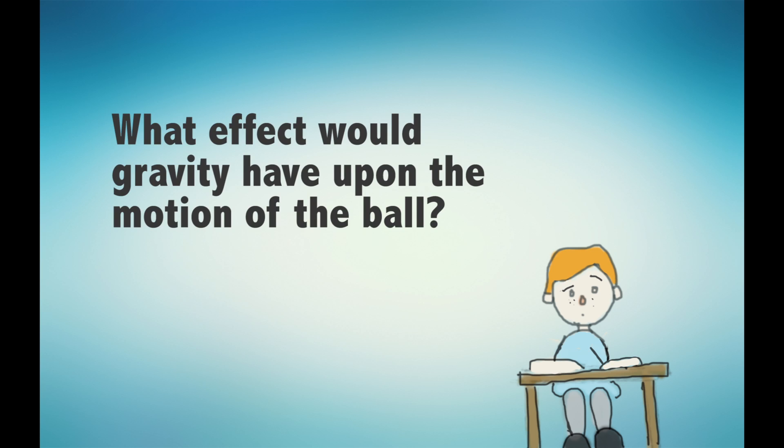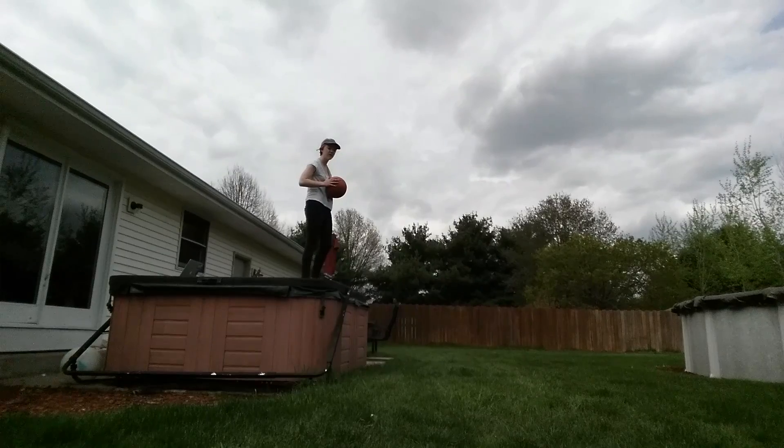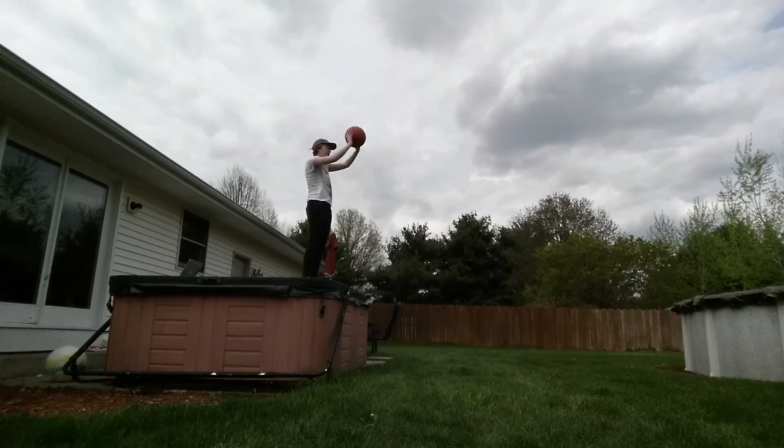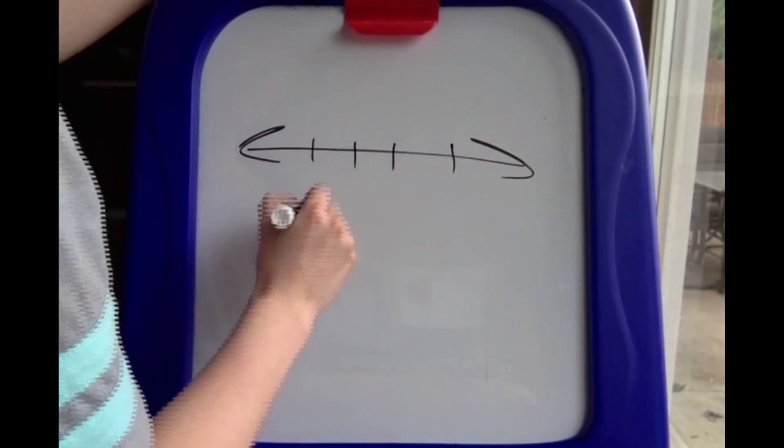But if the same object with gravity was tossed the exact same way, what effect would gravity have upon the motion of the ball? Would gravity affect the ball's horizontal motion? No. Gravity is a downward force upon the ball that influences its vertical motion, not horizontally. Remember, that's a constant free path.